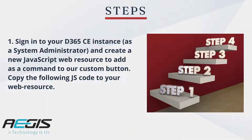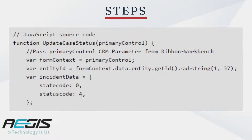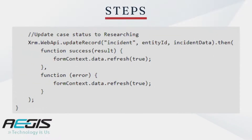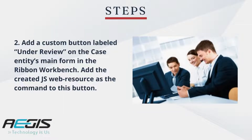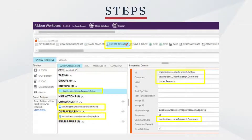Let's understand the steps for implementation. First, sign into your D365 CE instance as a system administrator and create a new JavaScript web resource to add as a command to our custom button. Copy the following JS code to your web resource. Second step is to add a custom button labeled Under Review on the case entity's main form in the Ribbon Workbench.